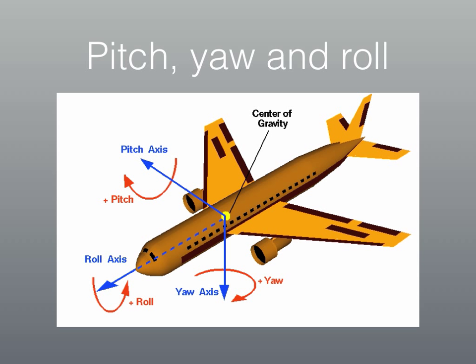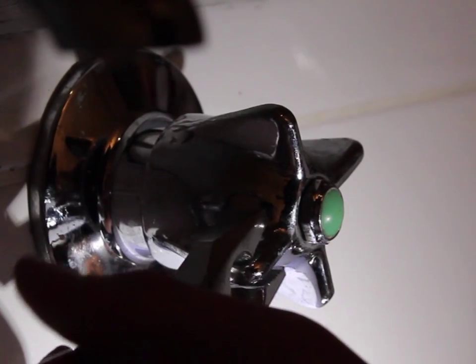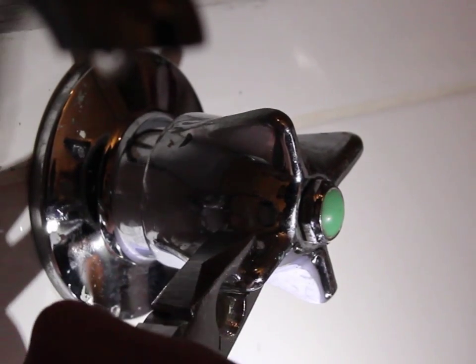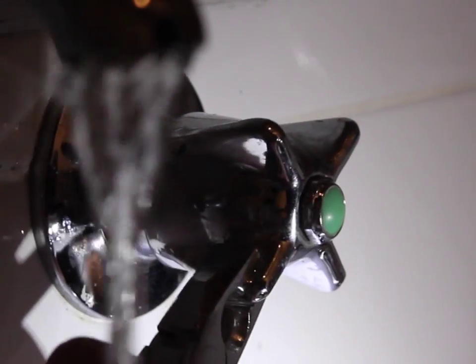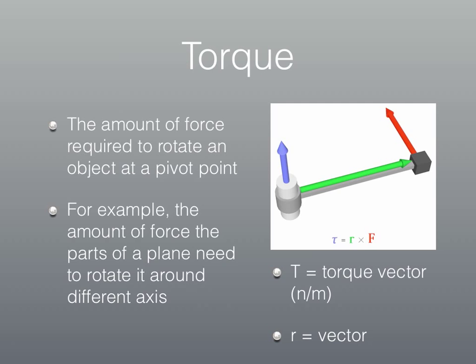But first, let's look at the concept of torque. Torque is the amount of force required to rotate an object at a pivot point. Now if you think about a spanner around a screw, you can see there are two factors which affect how hard it is to actually turn that spanner. The first one is the length of the spanner and how close it is from the pivot point to where you're pushing. The other factor is the amount of force that you actually apply to the spanner.